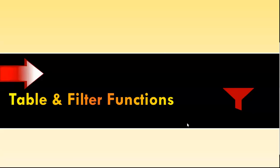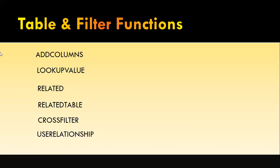Today we will proceed with exploring the table and filter related functions. Filter we have already explored, and table functions like addColumns. We have something called addColumns function. Using addColumns function, you can add columns to the existing table. That is the reason why we use addColumns - you don't have to programmatically; if you want to add columns to the existing table, you can use calculated columns or the addColumns function.